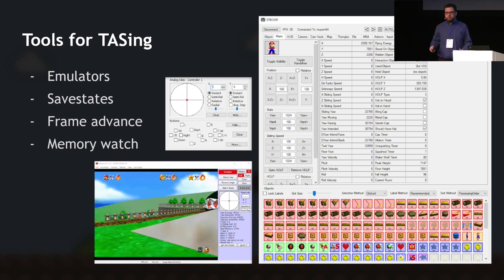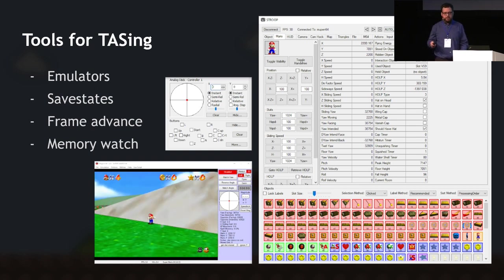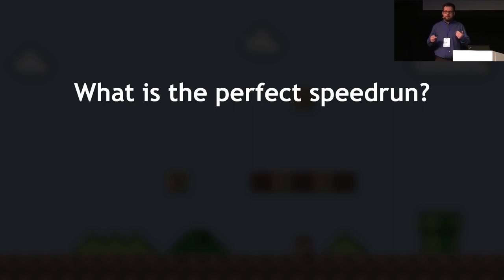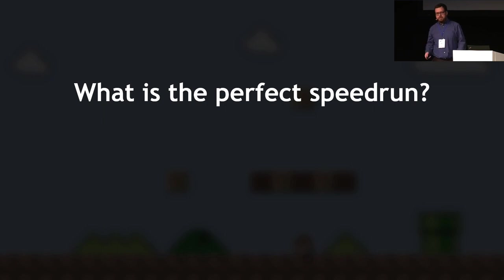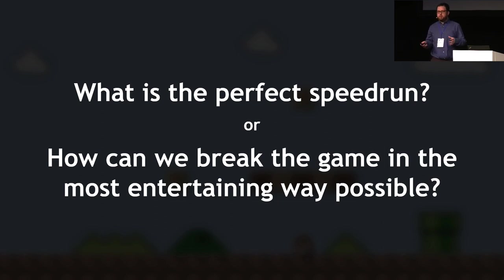With these tools in hand, you can try to answer the main question that tool-assisted speedrunning asks: what is the perfect speedrun? But there's also another subset called a tool-assisted superplay — the acronym TAS is the same, so they're used interchangeably — where instead of speedrunning, you ask the alternate question: how can we break the game in the most entertaining way possible? We'll see a bit of both, mostly focusing on speedruns but with some interesting superplays as well.